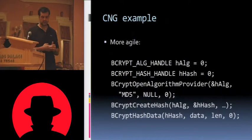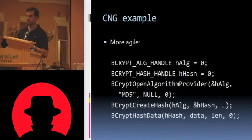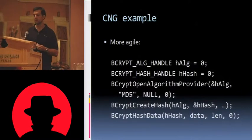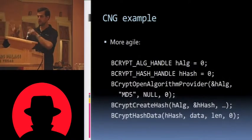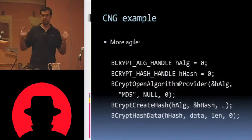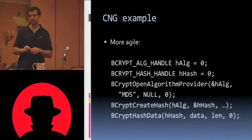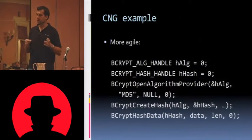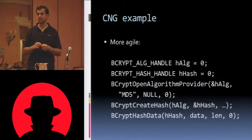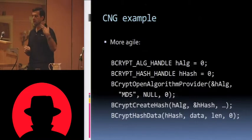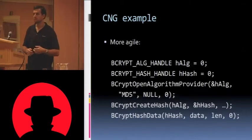CNG, on the other hand, does not work that way. Pretty similar to CAPI, you declare your handles, you call CryptOpenAlgorithmProvider with the algorithm you want — but in this case it's just a string. No weird messing around with integer header files. Just whatever string you want. You don't have to have the provider signed by Microsoft. You can write it yourself. As long as you have permission to install it on the machine, you're good to go. Then you create a hash and hash the data — very, very straightforward.